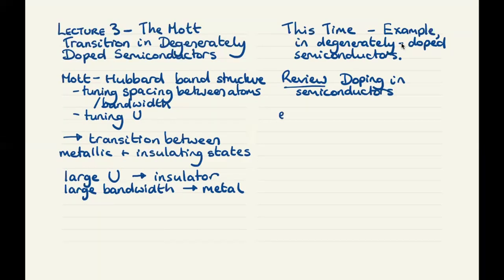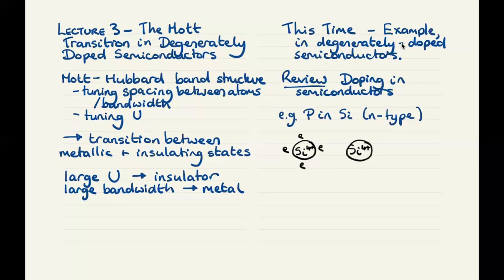Let's take the example of an N-type semiconductor, for example phosphorus in silicon. If we think of each silicon atom as a silicon 4-plus nucleus with four valence electrons, then each silicon atom bonds to four other silicon atoms, with each of its electrons pairing up to form a covalent bond. Of course, in reality this is three-dimensional — I'm drawing it in two dimensions just for simplicity.